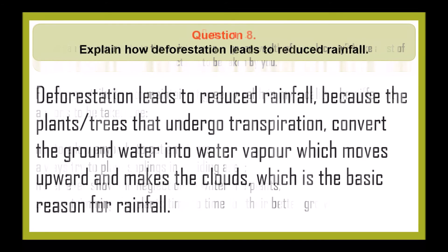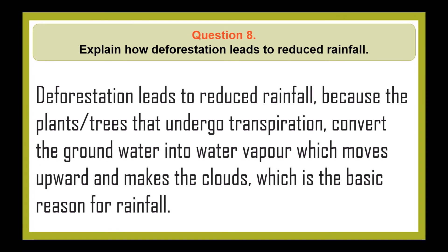Explain how deforestation leads to reduced rainfall. Deforestation leads to reduced rainfall because the plants and trees that undergo transpiration convert groundwater into water vapor, which moves upward and forms clouds, which is the basic reason for rainfall.